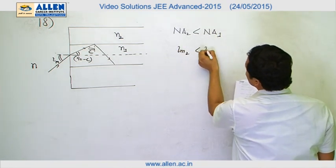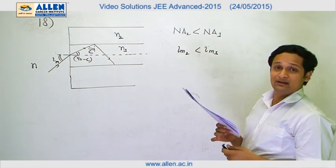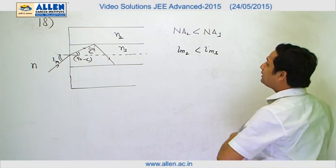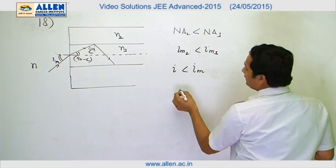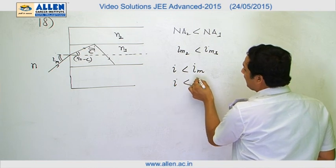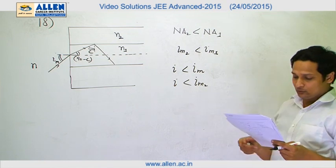IM2 will be less than IM1. And I is the incident angle; I should be less than IM. I should be less than IM2 because IM2 is the minimum.